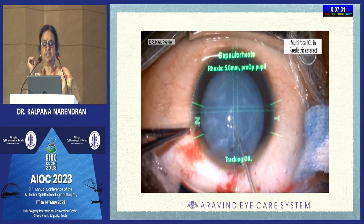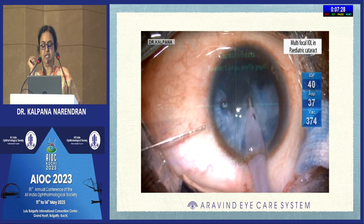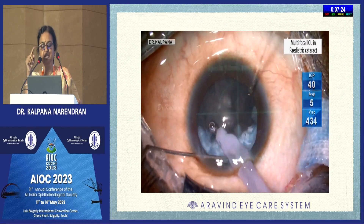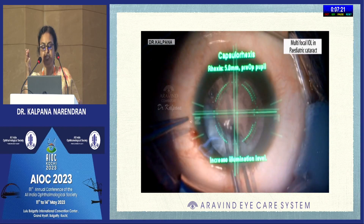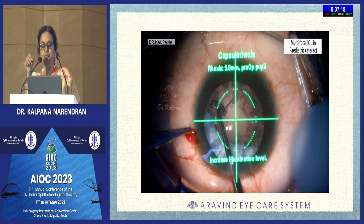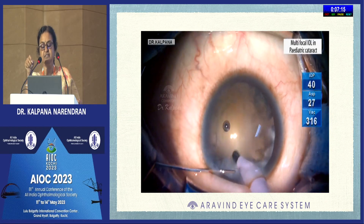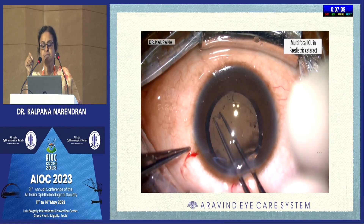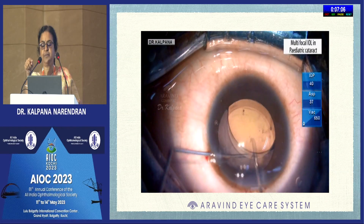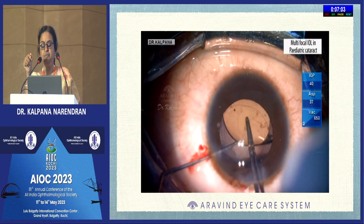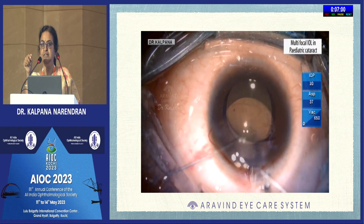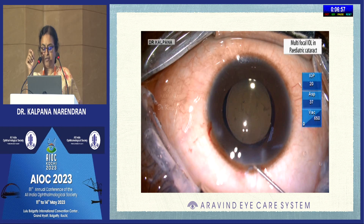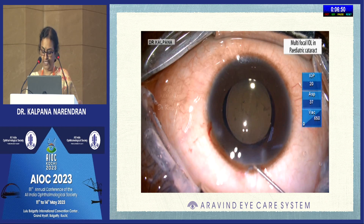This video shows a multifocal lens being implanted in a 12-year-old boy. I'm using the Verion guided system for centration of the capsulorhexis. This was an intermittent lens, so I did a small rhexis, removed part of the cortex, performed a secondary rhexis, and did a thorough cortical cleanup - especially important in a patient with a multifocal lens. This was a PanOptix lens from Alcon. Once the lens is placed in the bag, a good primary posterior capsulotomy should be done, as these children will invariably develop posterior capsular fibrosis. Anterior vitrectomy can be deferred in older children.